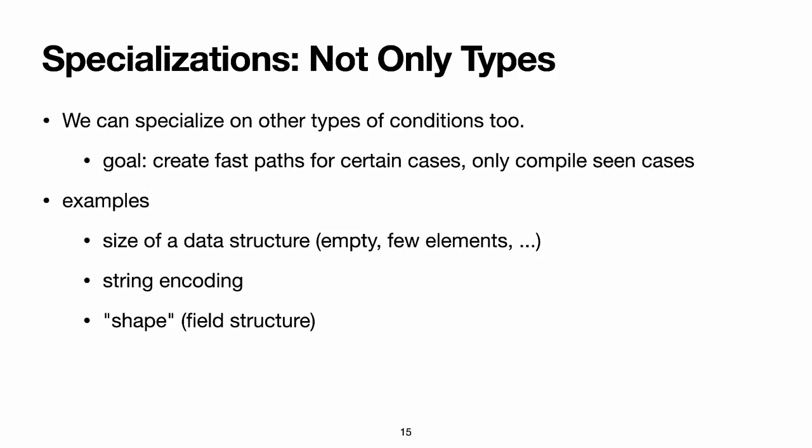So our example shows specialization for the type of the parameter of an operation, but you can specialize on anything you can compute. The point is that these conditions can also lead to significantly simpler specializations. This allows us to create fast paths for simple cases, and to isolate complex cases so that we compile them only if we really need them. Remember that adding compiled code is really bad, because it bloats the code cache.